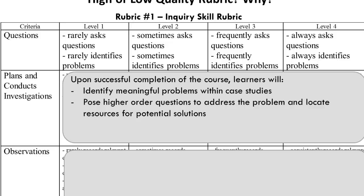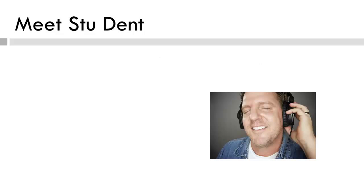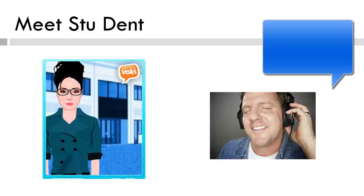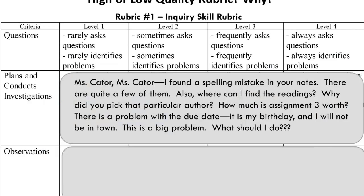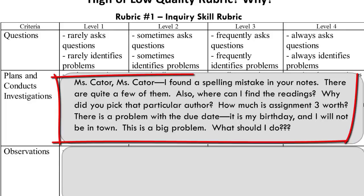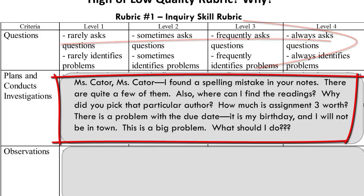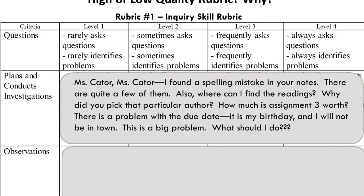Now assuming we do use this rubric, take a look at this vignette. Be prepared to provide a level to reflect the questions. Meet Stew. 'Ms. Cater, Ms. Cater, I found a spelling mistake in your notes. There are quite a few of them. Also, where can I find the readings? Why did you pick this particular author? How much is assignment three worth? There is a problem with the due date — it's my birthday and I will not be in town. This is a big problem. What should I do?' Based on this criteria, where would you place Stew along the questions continuum? He asked lots of questions — is there other information to guide this classification? No. So he does ask a lot of questions and he identified problems. It is hard to say exactly where he might fit on this row without additional information, but for this example, we might assume he fits within level three or four along the continuum.